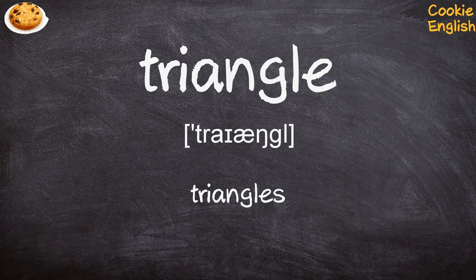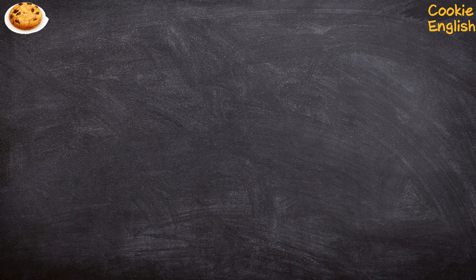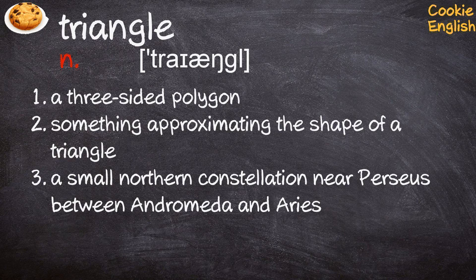TRIANGLE. Noun. 1. A three-sided polygon. 2. Something approximating the shape of a triangle. 3. A small northern constellation near Perseus, between Andromeda and Aries.